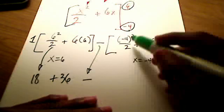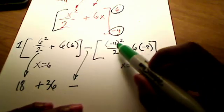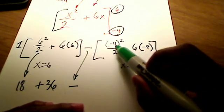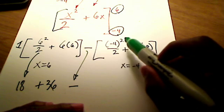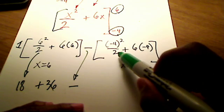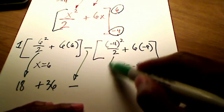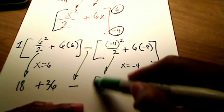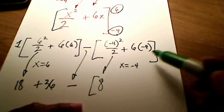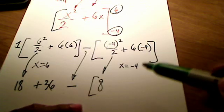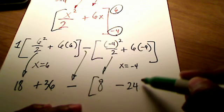Here comes my minus sign. And look, this first term is positive because I have a negative 4 inside the parentheses. That's negative 4 times negative 4, which is positive 16, and 16 divided by 2 is 8. And over here I've got 6 times negative 4, which is a negative 24.